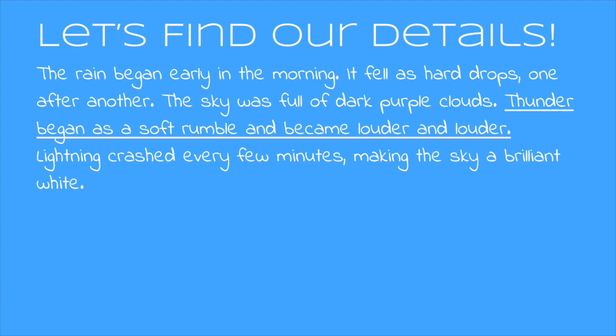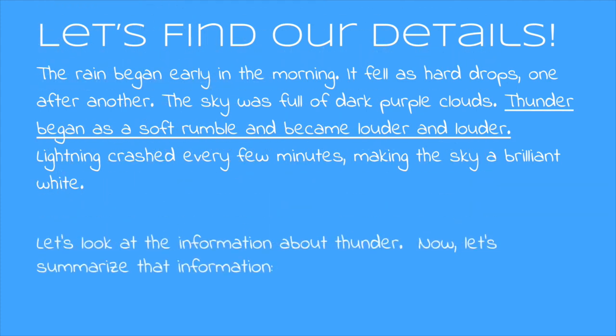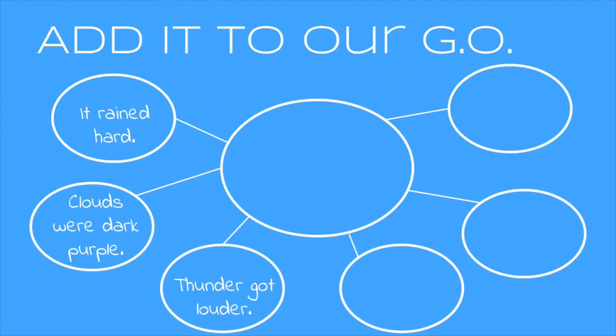Let's move on to the next detail. This is all the information about thunder, and now we need to summarize it. Thunder began as a soft rumble and became louder and louder. We can summarize this as, the thunder got louder, and then add it to our graphic organizer.